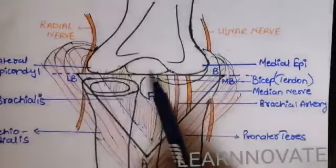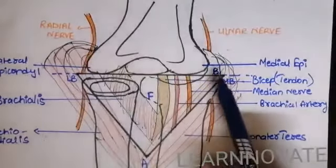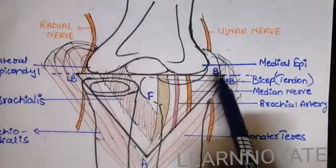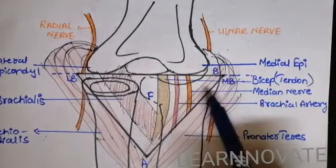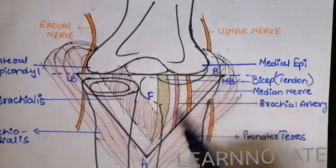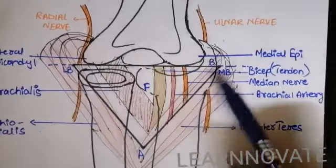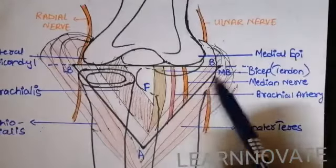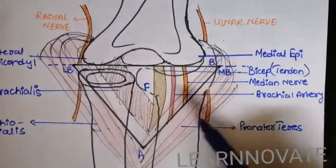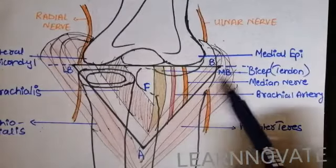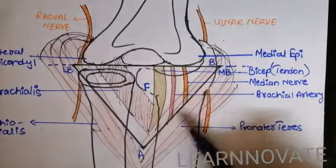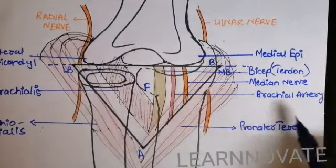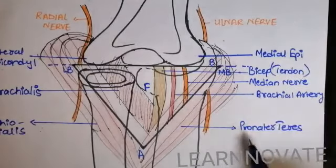When we join these condyles by imaginary line, it will form the base of the cubital fossa. When the base is attached on the medial boundary, the medial boundary is formed from a muscle. Here you can see there is a muscle attachment we call as the pronator teres.